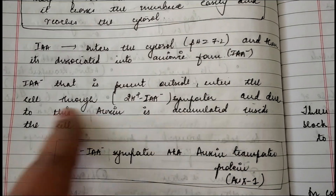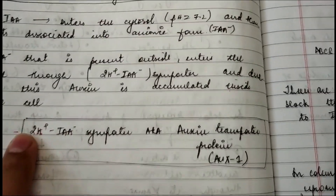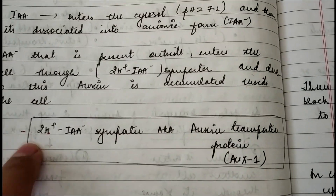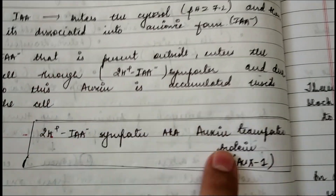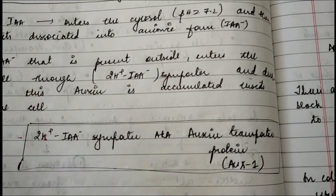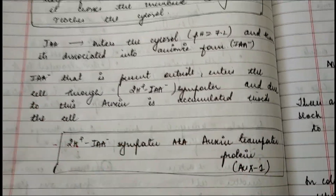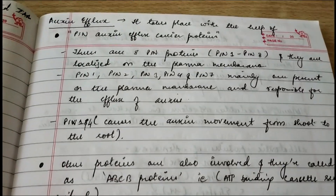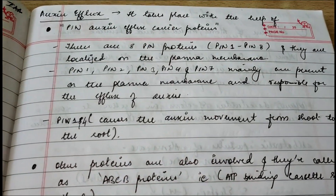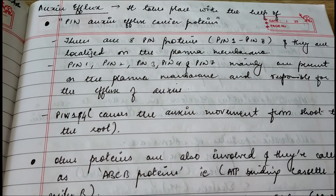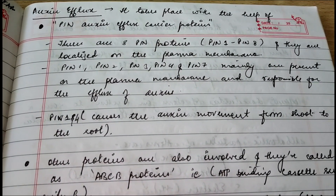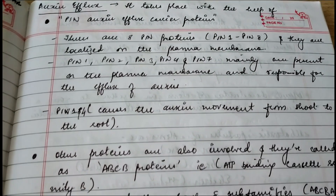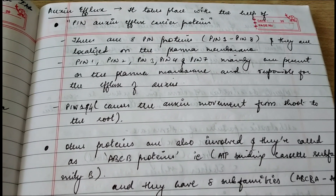AUX1 and the 2H⁺/IAA⁻ importer are the same; do not be confused if you see both terms in an exam — they both help in auxin influx. Now, auxin efflux — that is, throwing auxin out — takes place with the help of PIN auxin efflux carrier proteins.